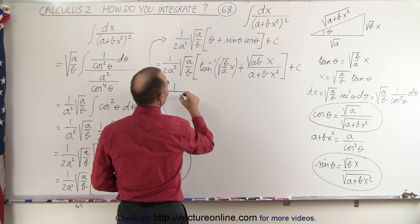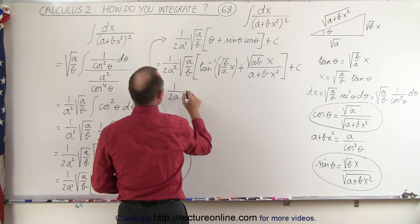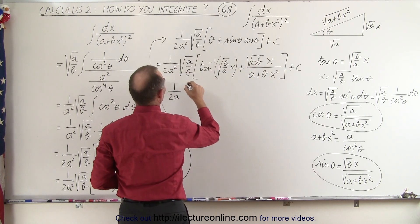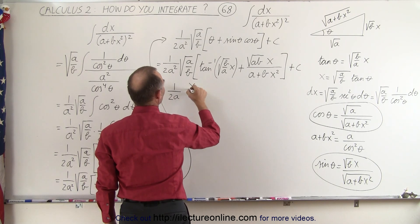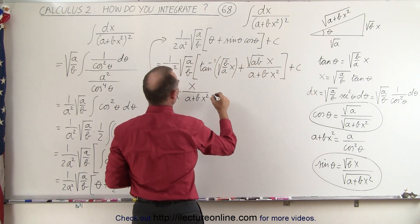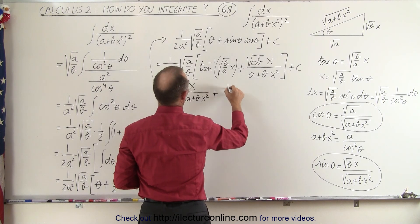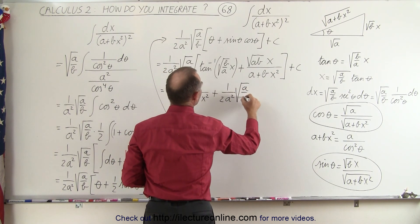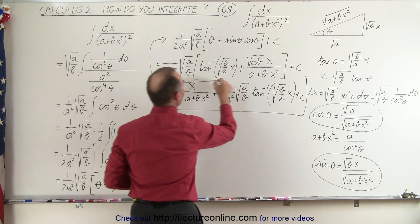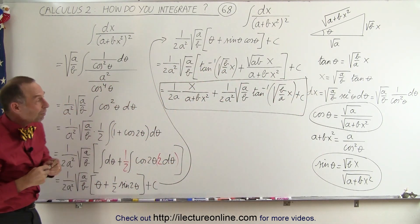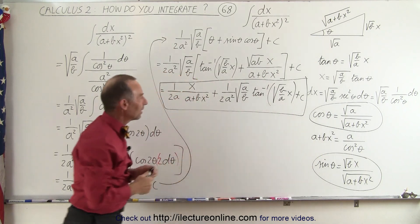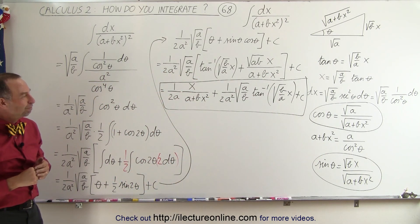We can rewrite and simplify a little further. The B's cancel out, so we're left with 1 over 2A times X divided by A plus BX squared, multiplied together, plus 1 over 2A squared times the square root of A over B, plus a constant of integration — and that is the solution to this integral. A little bit more complicated, but using the trig substitutions just like before, we find the solution. And that's how it's done.